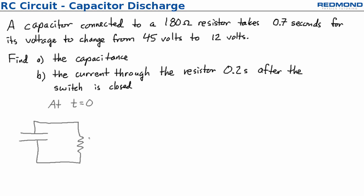The first thing we're given is that the resistor has a resistance of 180 ohms. We're also told that the capacitor voltage starts off at 45 volts and switches down to 12 volts and it takes 0.7 seconds for it to go down to 12 volts.